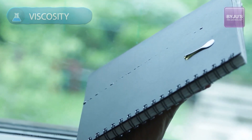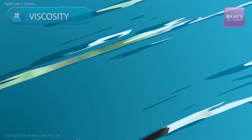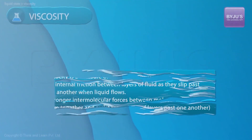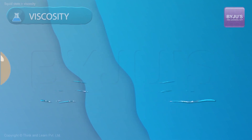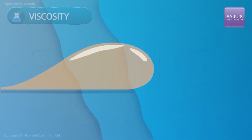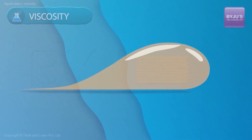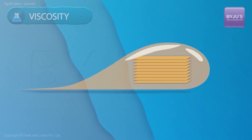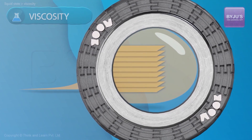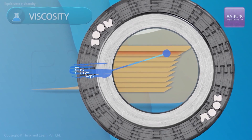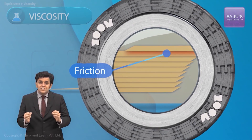To explain this, let us understand viscosity. Viscosity is a measure of how resistant a liquid is to flowing. When a liquid is flowing, there are basically layers of the liquid that are sliding past one another. When these layers slide past one another, there is resistance. The value of this resistance is different for different substances.